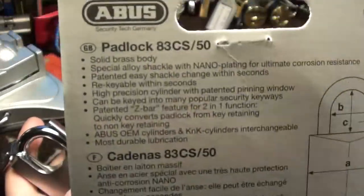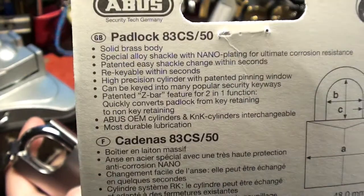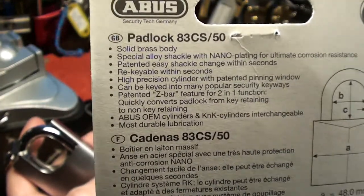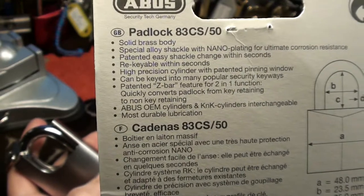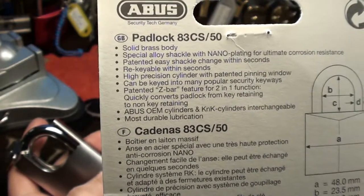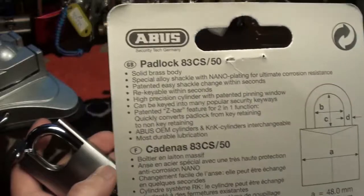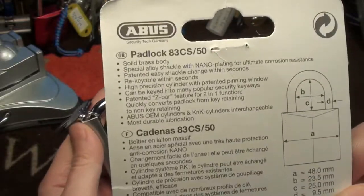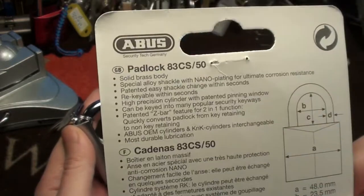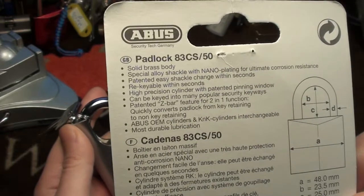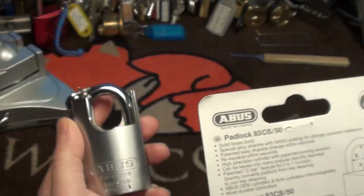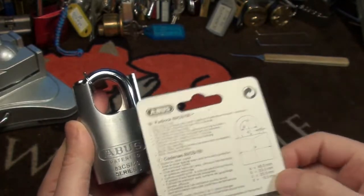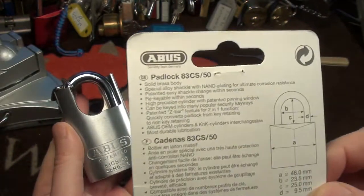You can see it's a solid brass body, special alloy shackle. Patented shackle change. I have seen the tool for this but I don't intend to change the shackle. It's capable of course with a removable core. High precision and that's really true. There's nothing very special inside. I will tell you this later.